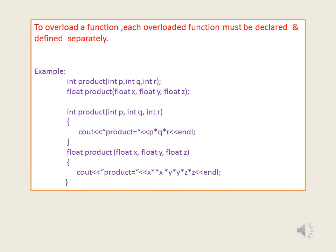To overload a function, each overloaded function must be declared and defined separately. In this example, the function product is overloaded two times: first with three integer values and an integer return type, and second with three float values and a float return type. The compiler automatically chooses the right function depending on the number and type of arguments.